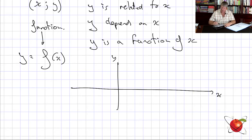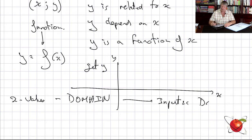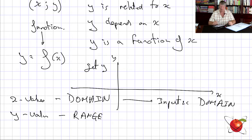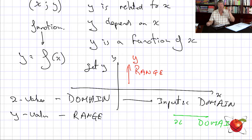We put in x and we get y. The x values that we put in — the ones we choose — we call the domain. The y values that we get out we call the range. So the x we put in is the domain and the y we get out is the range. A mnemonic: x comes before y, and d comes before r in the alphabet.